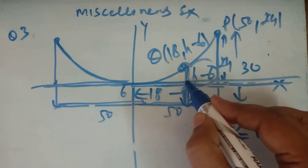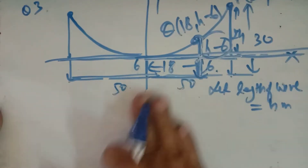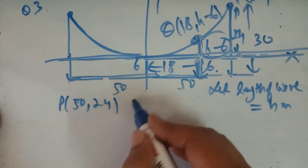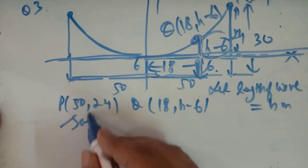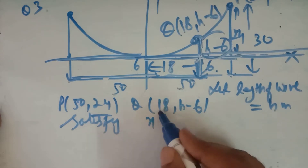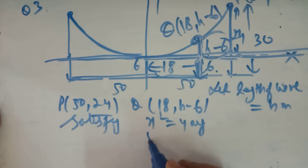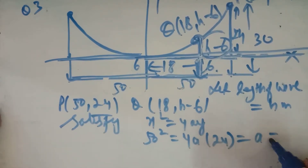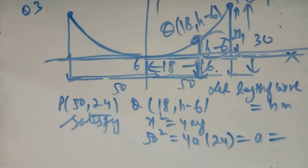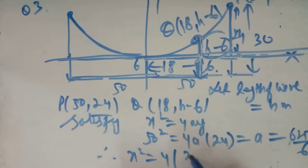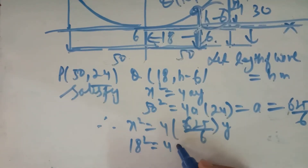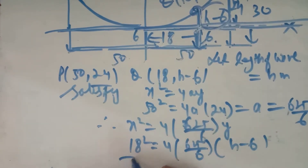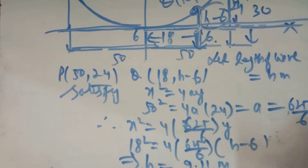Point P is (50, 24) and Q is (18, h−6). Like question number 2, both points will satisfy the equation of the parabola X² = 4AY. First put X = 50: 50² = 4A × 24, you will get A = 625/6. Therefore X² = 4 × (625/6) × Y. Now put X = 18, Y = h−6 and solve to get h = 9.11 meters.